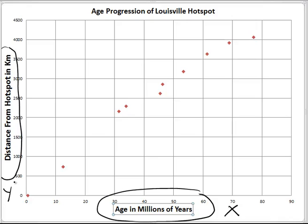Remember, velocity is simply distance divided by time. We've plotted distance versus time, so the slope of our line indicates the velocity of the plate as it passes over the hot spot. That velocity may not be constant — the plate may slow down or speed up as it passes over the hot spot.